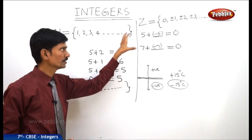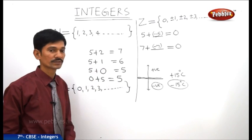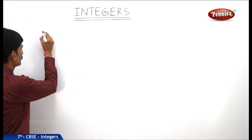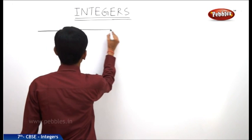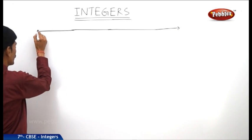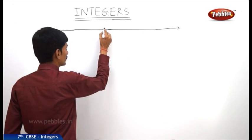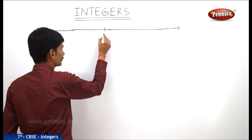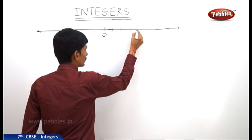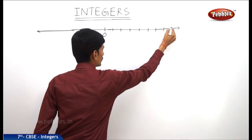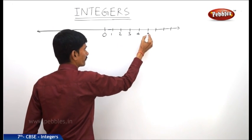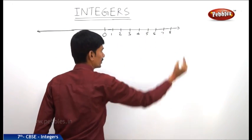Now let us discuss the set of integers in detail and see how to represent integers on the number line. First, take a number line and mark the integer which is neither positive nor negative, that is 0. On the right side of 0, with equal intervals, we represent positive integers starting from 1, 2, 3, 4, 5, 6, 7, 8 and so on.